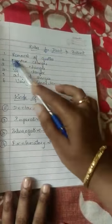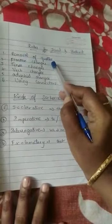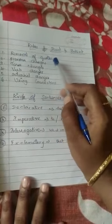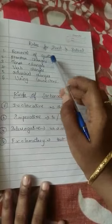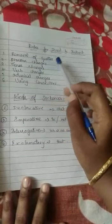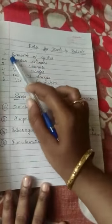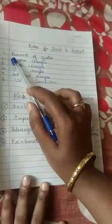Next, pronoun changes. In pronoun changes, when the person speaking is a boy, we will use 'he'. If it is a girl, we have to use 'she'. If it is people, we have to use 'they'. According to the people, we are changing the pronoun changes.